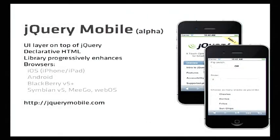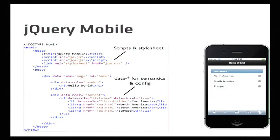jQuery Mobile is in alpha right now — also a UI layer on top of jQuery, also declarative HTML with a progressive enhancement approach. It supports iOS, Android, BlackBerry 5, and a couple of other secondary browsers. It produces page-oriented experiences, and the source looks like HTML5 using the data-star attributes from HTML5 to add behavior, producing nicely styled web pages that you can interact with.